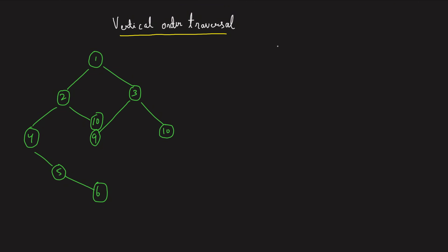Hey everyone, welcome back to the channel. Today we will be solving the problem of vertical order traversal in a given binary tree. If I try to draw vertical lines in this binary tree, the first vertical line contains four, and the next vertical line has two and five.